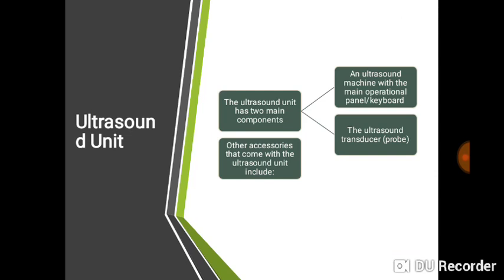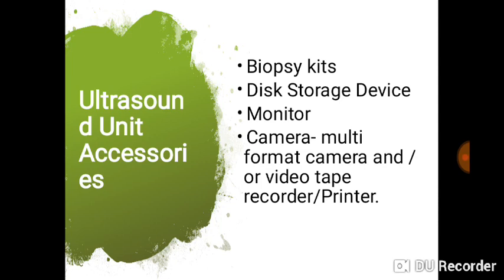A typical ultrasound machine is designed to send out sound waves into the body, and when those sound waves reflect from deep inside the tissues — based on differences in acoustic impedance — the reflected sound is received, converted to electrical signals, and displayed on the ultrasound monitor. That is what the ultrasound unit does, which is why it is made up of several components and accessories.